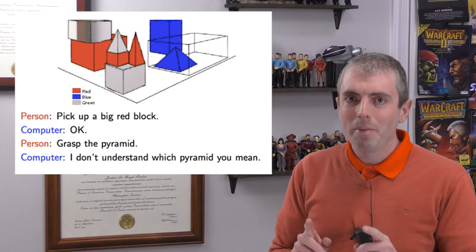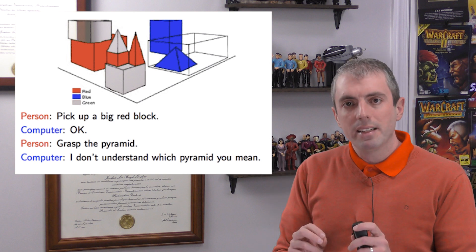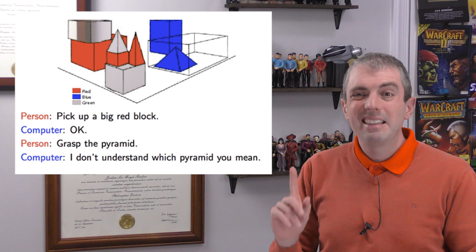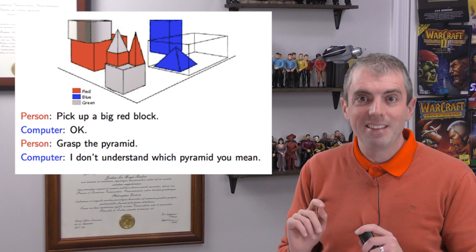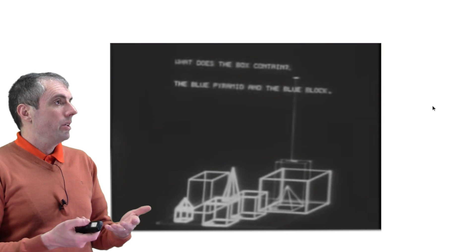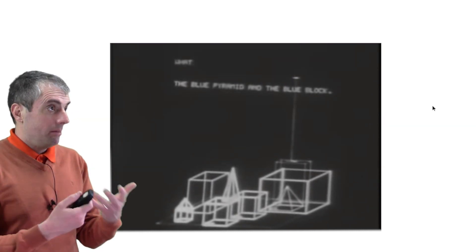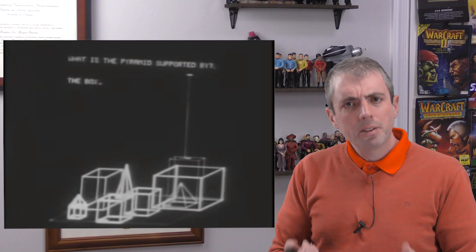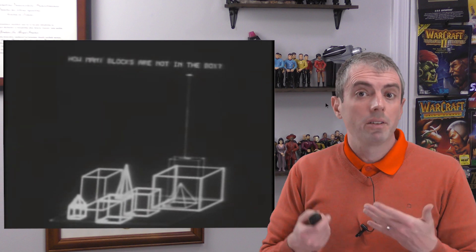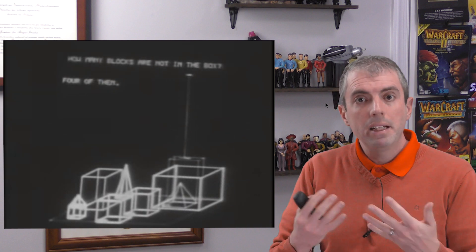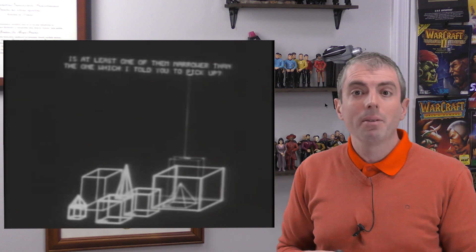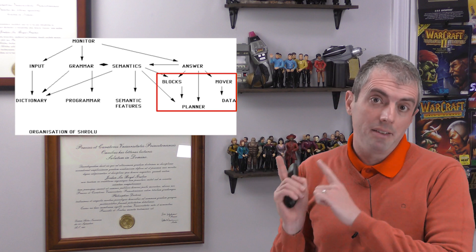Despite its funny name, SHRDLU remains the OG question answering system. The basic idea is that instead of just answering questions about a static world, you can move objects around in a 3D world — this is a later rendering of it; back in the early 70s, computer graphics aren't as advanced as they are today. And if the system couldn't tell what object you're asking about and the query or statement was ambiguous, it asked a follow-up question to clarify which one you meant. The big difference from LUNAR is that the knowledge base isn't static anymore — it changes as the user interacts with the block world and moves stuff around.